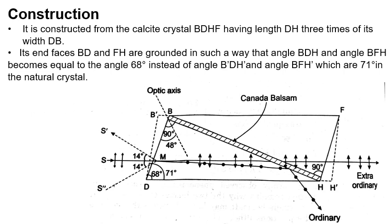The Nicol prism is constructed from a calcite crystal BDHF having length DH that is three times its width DB. Its end faces BD and FH are ground such that angles BDH and BFH become 68 degrees, instead of 71 degrees as in the natural crystal.